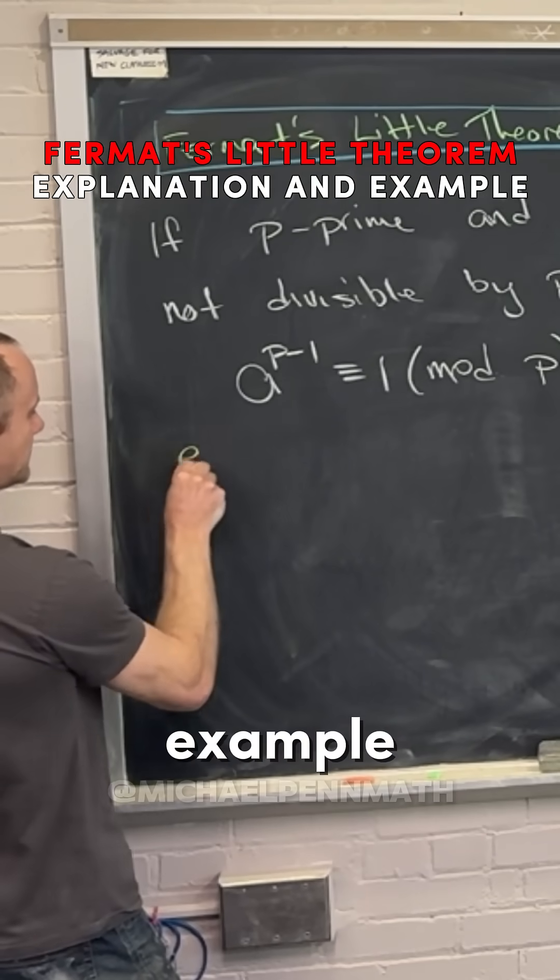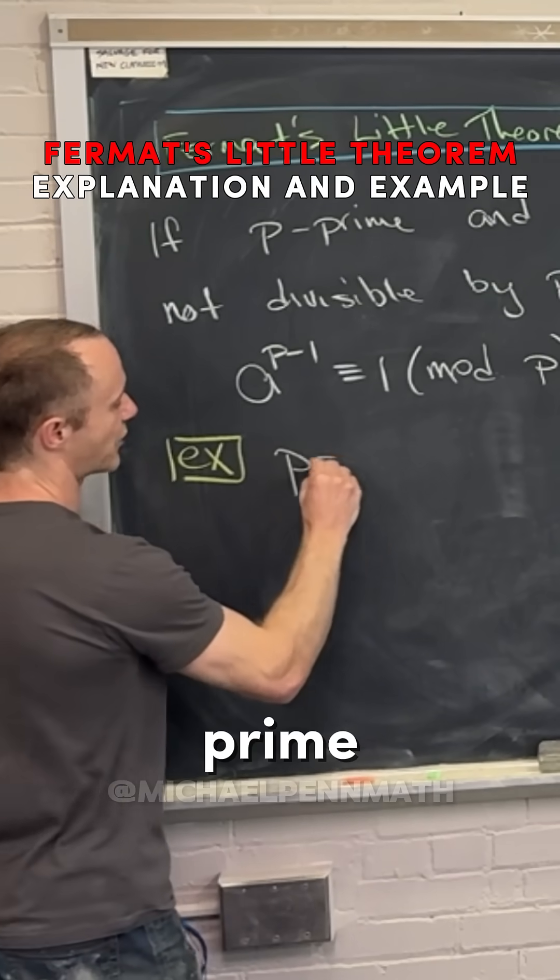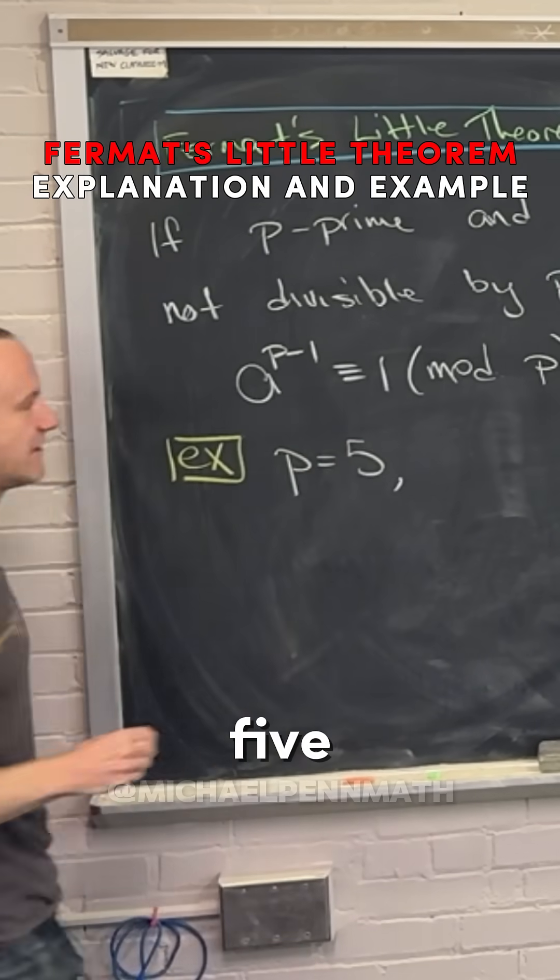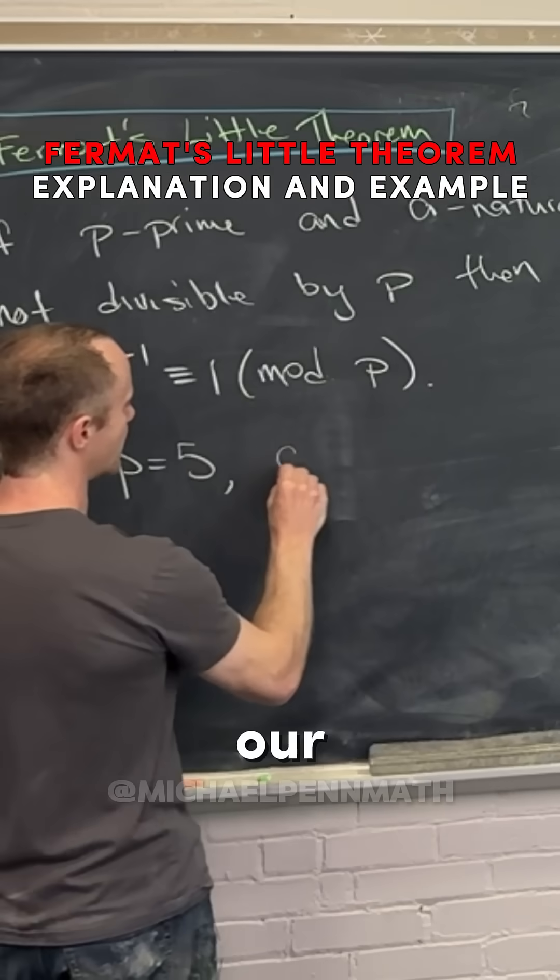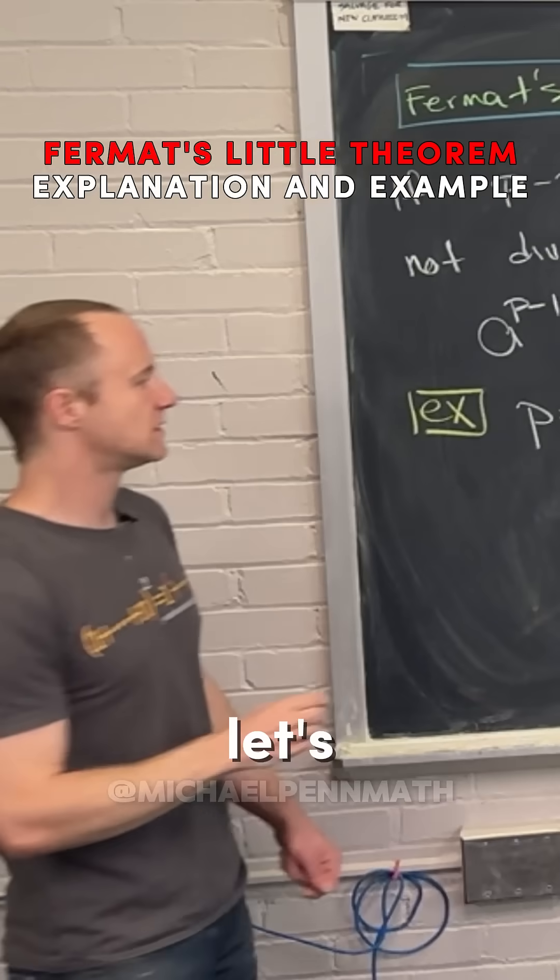So let's look at an example. Let's say p, our prime, equals 5, and let's pick a, our number, equal to 3.